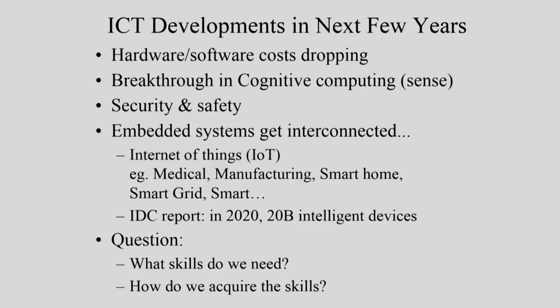Developments we should be prepared to address include: hardware and software costs are dropping, so areas where embedded systems were not previously considered may now be ripe for exploitation. There has been a breakthrough in cognitive computing with newer sensors that can sense things in unanticipated ways. Security and interconnection — the internet of things — have become very important. Think of intelligence in the cloud sensing the environment through distributed sensors, computing a response, and affecting the environment. This is relevant in medical computing, manufacturing, smart homes, smart grid, and more. An IDC report says that by 2020 there should be 20 billion intelligent devices — almost a few embedded systems per human being on this planet.